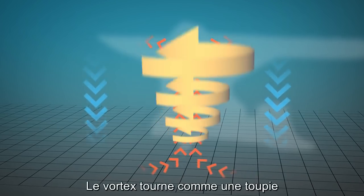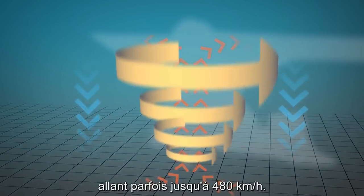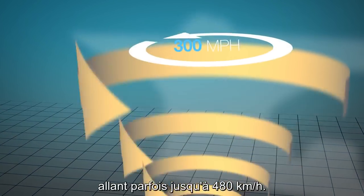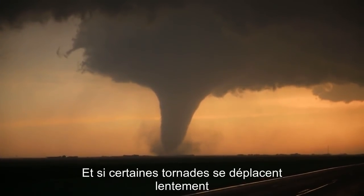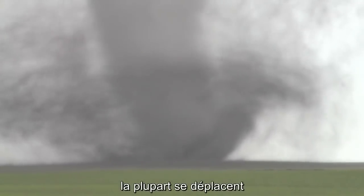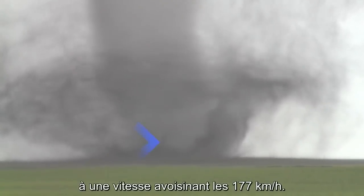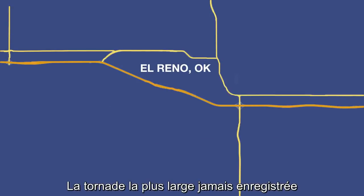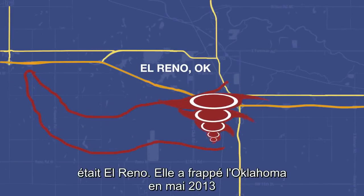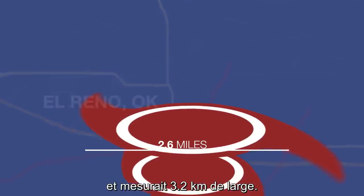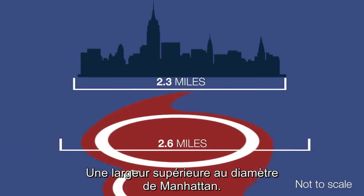This allows the storm to keep growing as warm air is sucked into the storm away from the cool downdraft. The vortex spins like a top, sometimes up to 300 miles per hour. And while some tornadoes move slowly, others can travel over the ground at speeds of over 110 miles per hour. The widest tornado ever recorded, the May 2013 El Reno tornado in Oklahoma, was 2.6 miles across — wider than Manhattan.